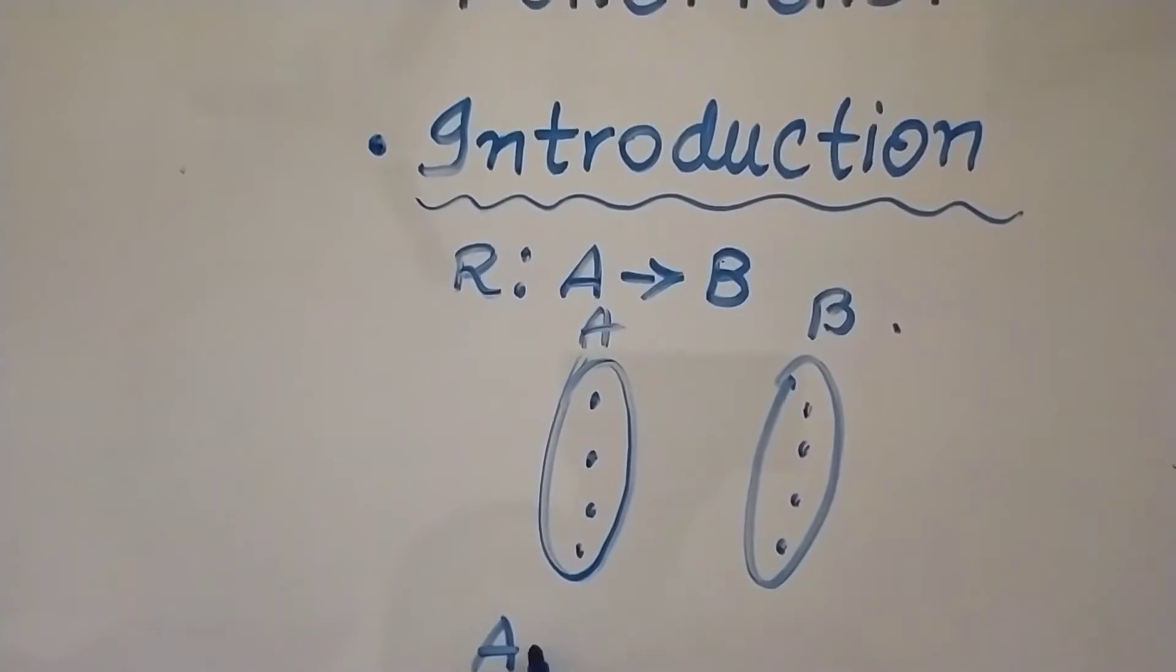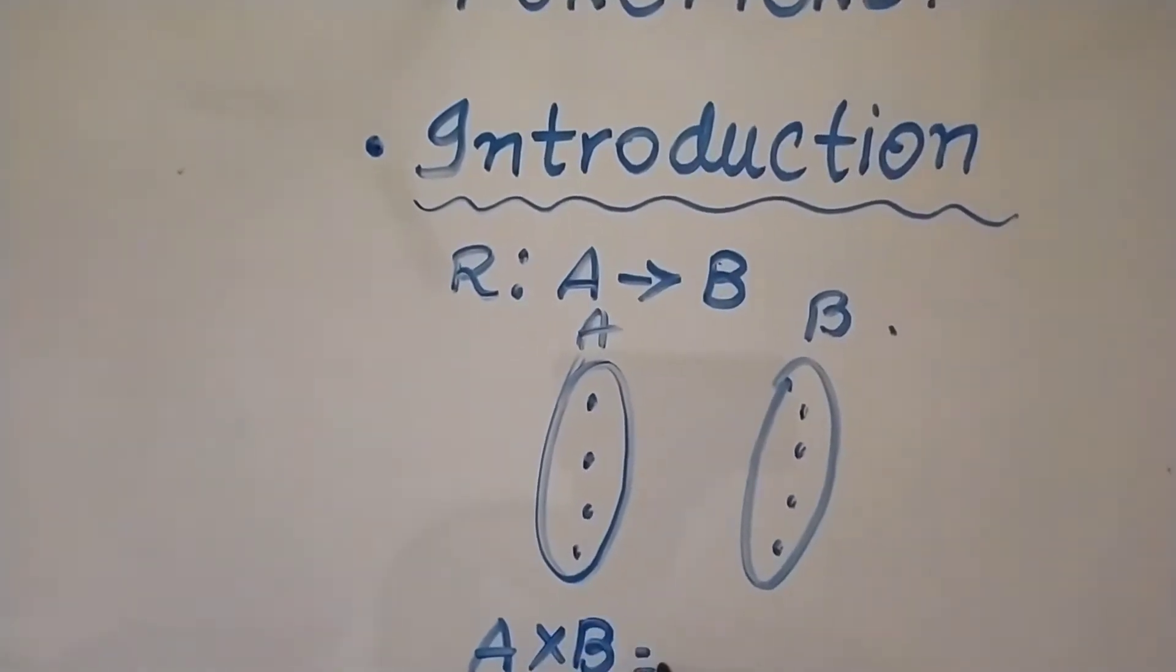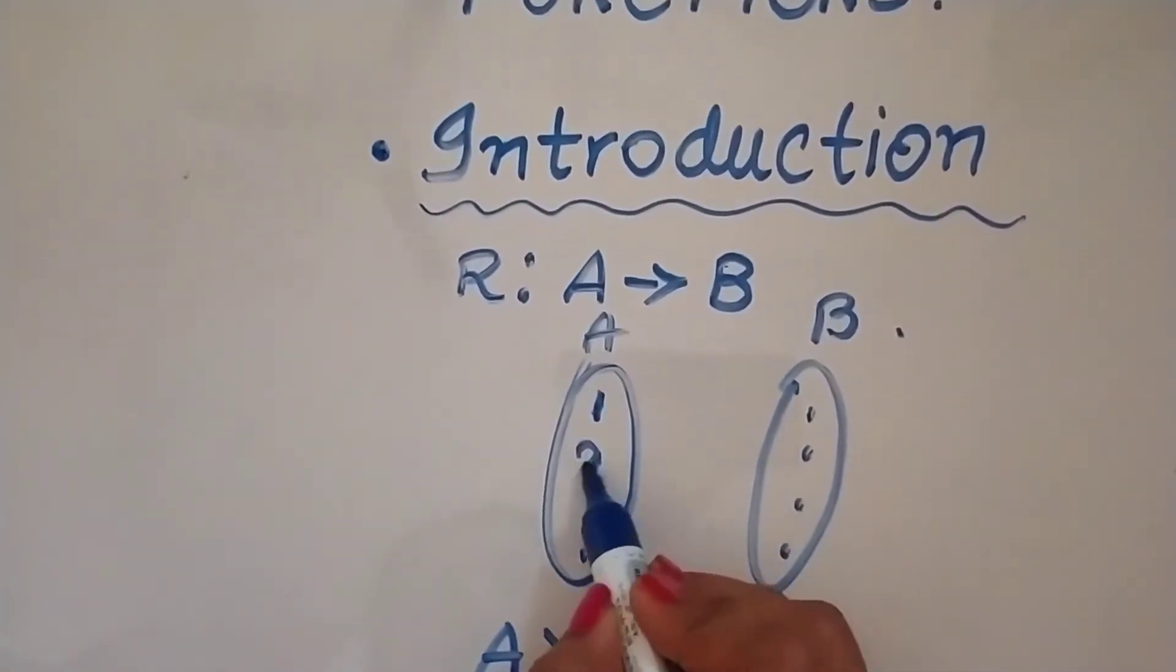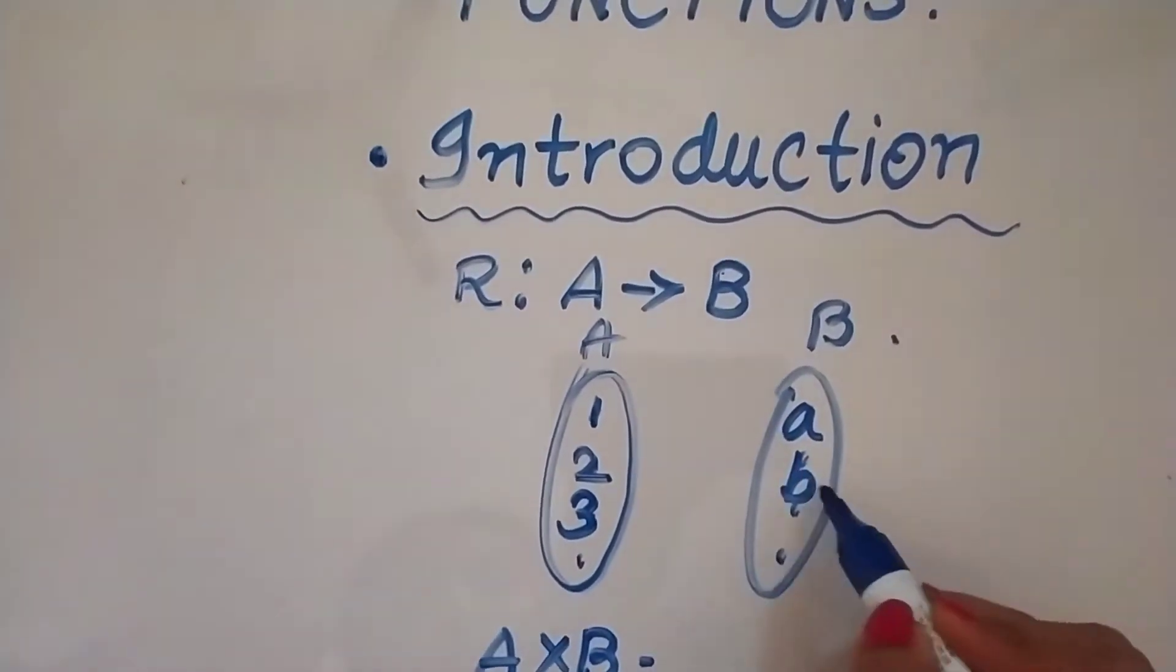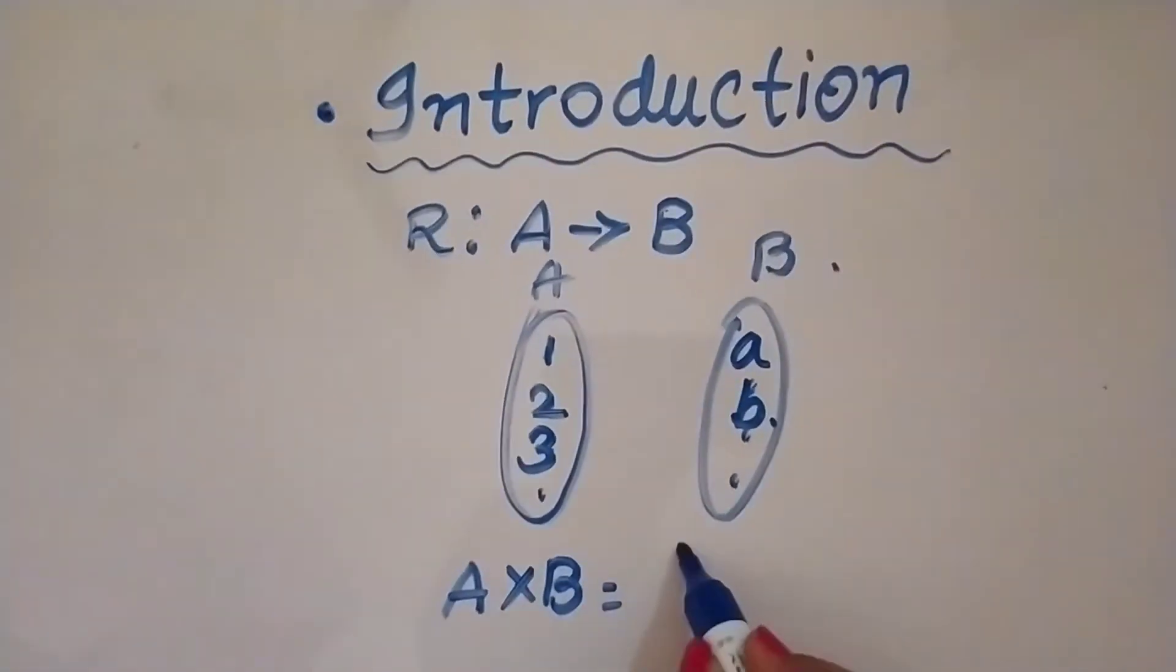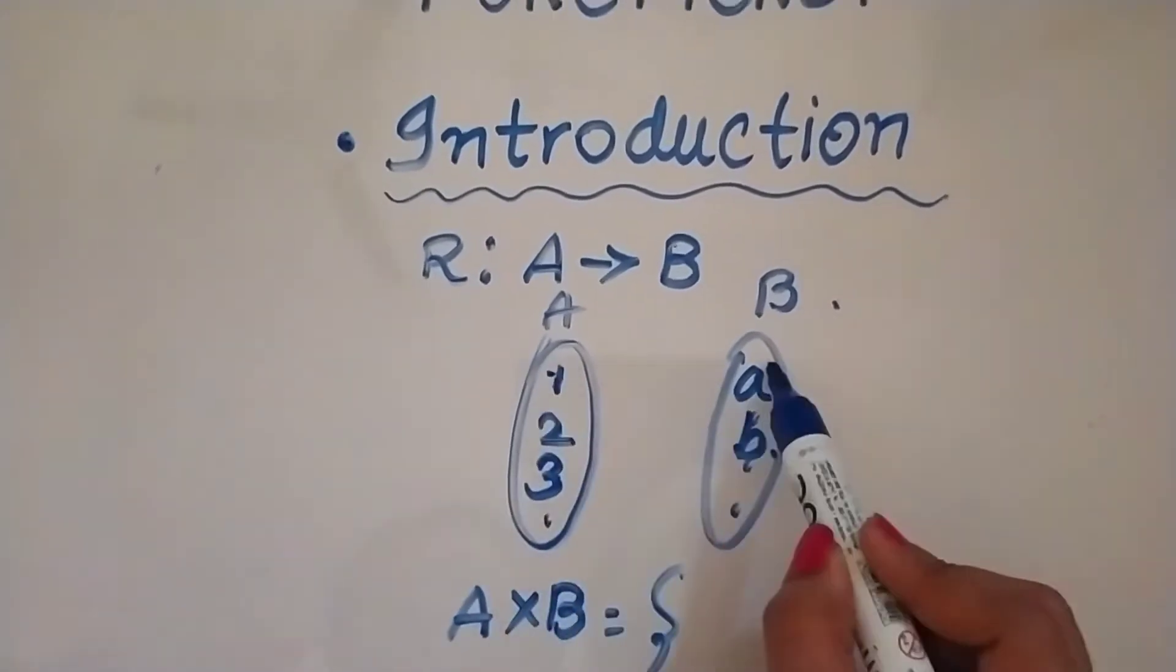Now if I have to write the Cartesian product, for example here I have the elements 1, 2, 3, and here I have A, B. You will get the Cartesian product as 1A.